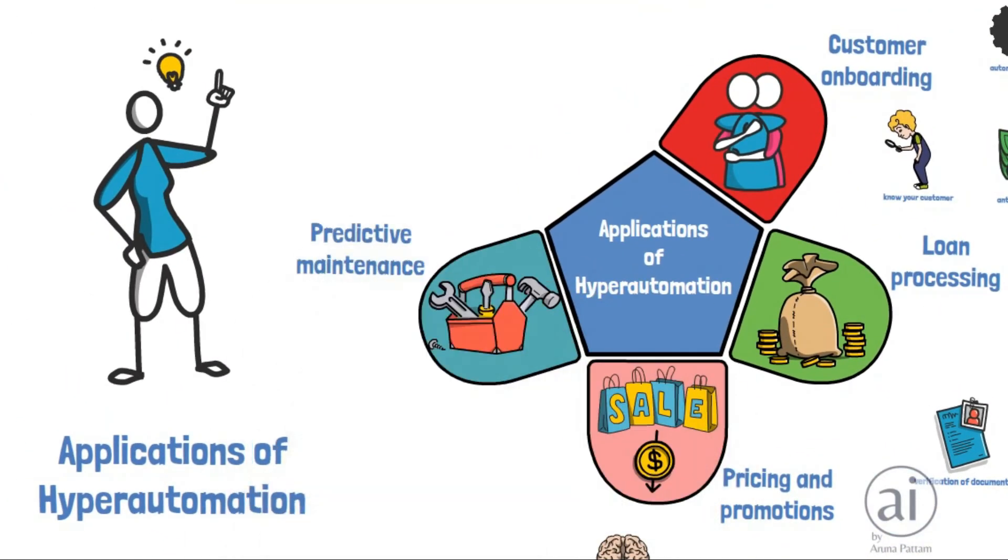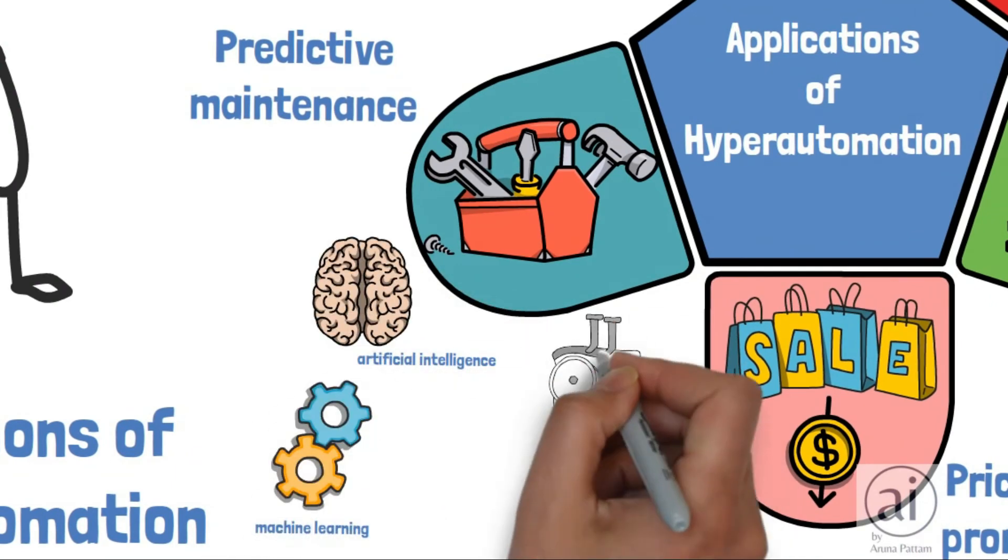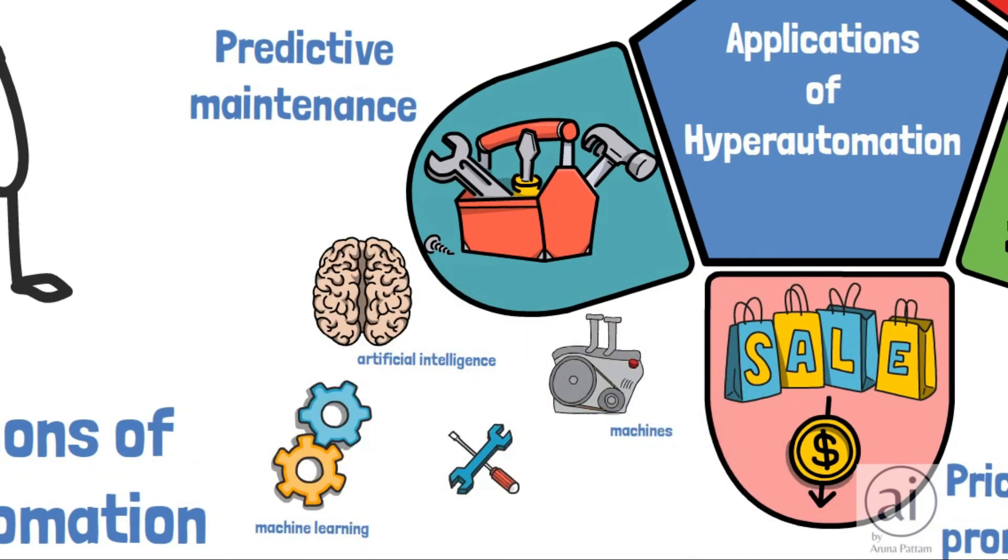In predictive maintenance, AI and ML can be used to predict when a machine is going to break down and take preventive measures.